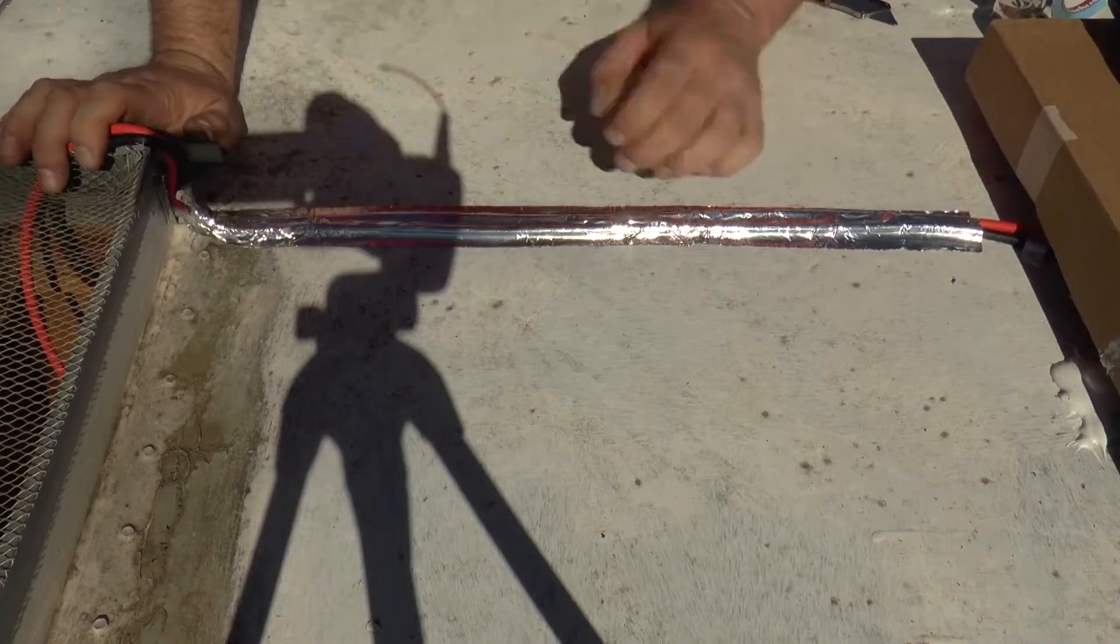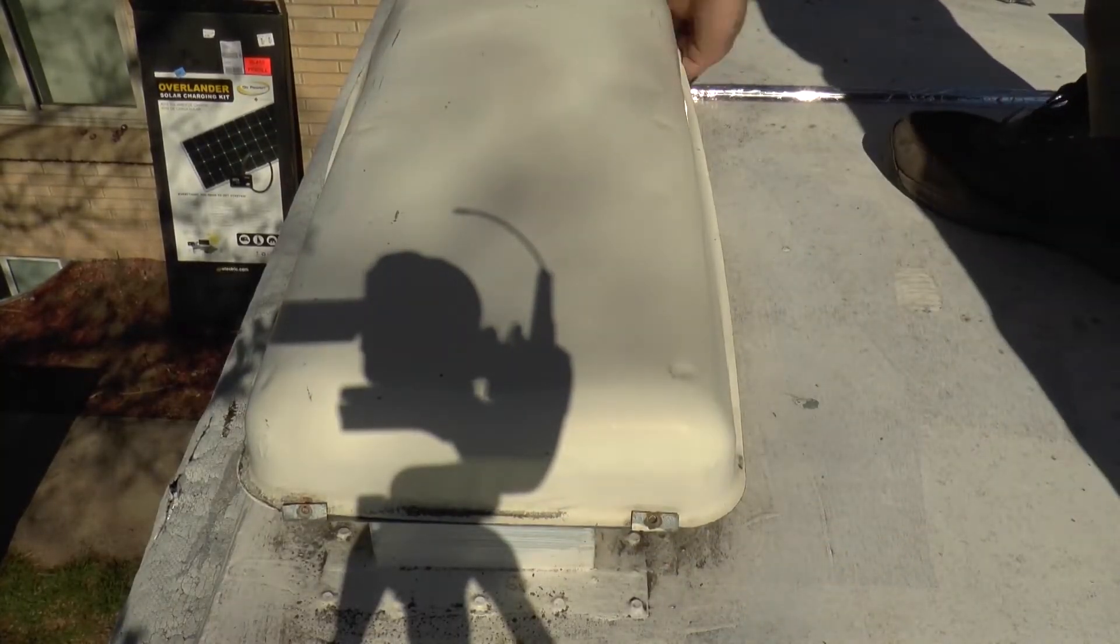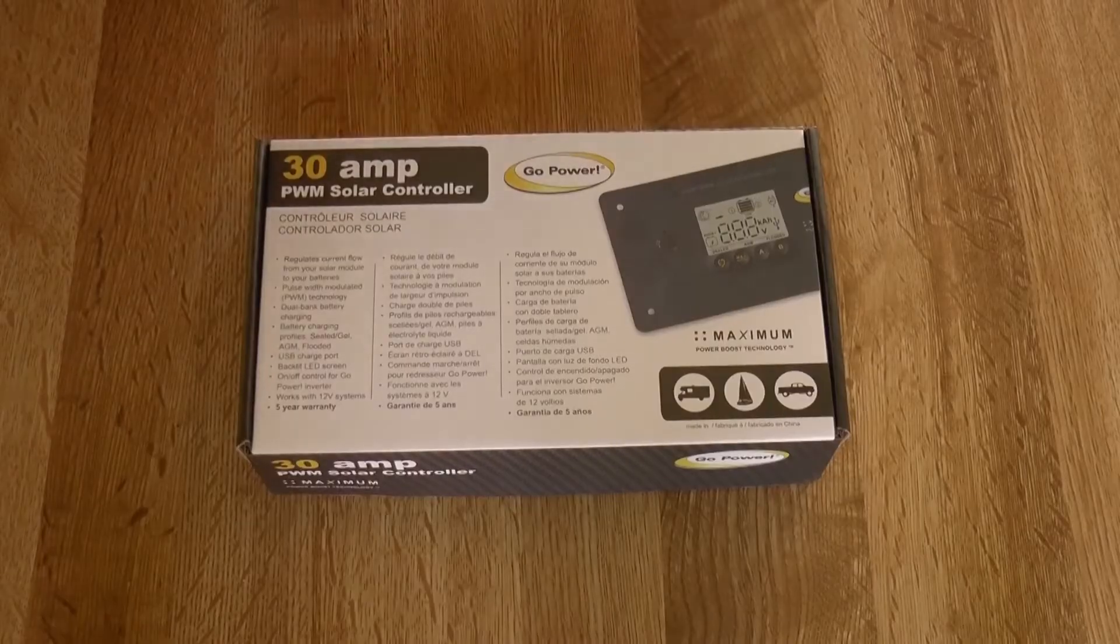So once we get our wires kind of secured you can put your vent cover back on after you've put your protective sleeves and reattached your screen and all that good stuff. Make sure you put your screws back on your refrigerator vent and we'll move on.